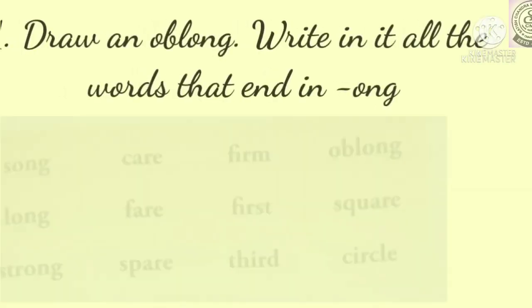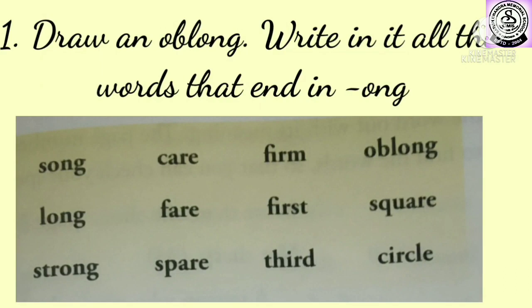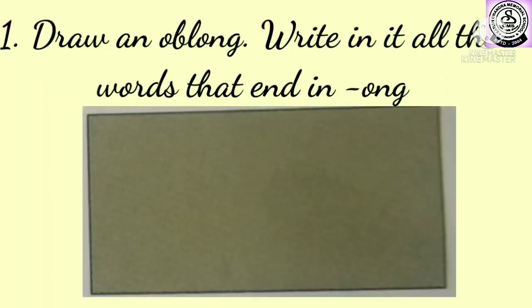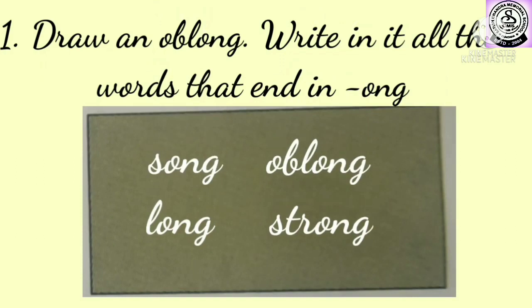Now let us do the exercise. Question number one: draw an oblong and write in it all the words that end in O-N-G. So children, you have to find the words which end in O-N-G from the box. Words that end in O-N-G: S-O-N-G song, L-O-N-G long, S-T-R-O-N-G strong, O-B-L-O-N-G oblong. Now you will draw an oblong and write down all these words: song, long, oblong, strong.